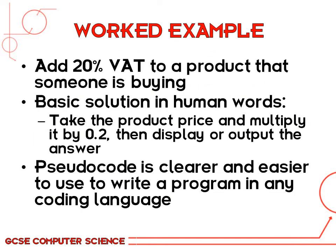If you want to add 20% VAT to a product someone's buying in a shop — 20% VAT is standard in this country, so this is happening every time you buy something. The basic solution in plain language is that you'd take the product price and multiply it by 0.2 to find out what 20% is, and then display or output the answer.